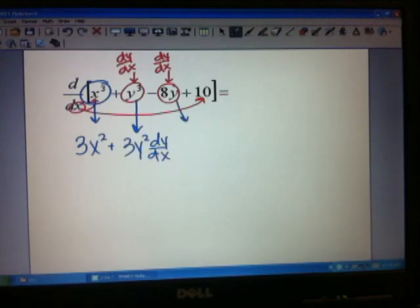From my 8y term, I'll get negative 8 is the derivative of 8y, but I do have to include the dy/dx, the derivative of the y portion. And then plus 0 for the 10.